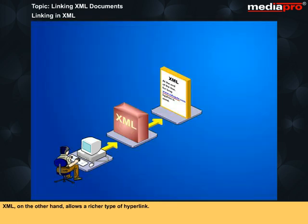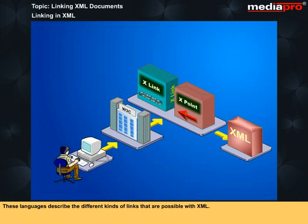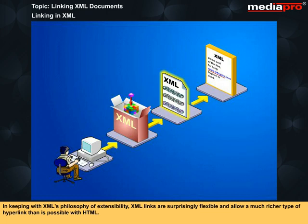XML, on the other hand, allows a richer type of hyperlink. Shortly after it released the XML standard, the W3C also proposed two XML linking standards: the XML linking language, abbreviated XLink, and the XML pointer language, abbreviated XPointer. These languages describe the different kinds of links that are possible with XML. In keeping with XML's philosophy of extensibility, XML links are surprisingly flexible and allow a much richer type of hyperlink than is possible with HTML.